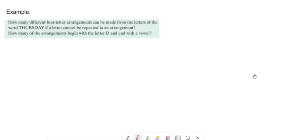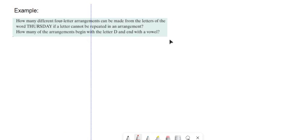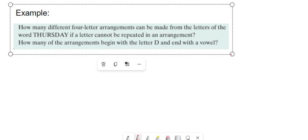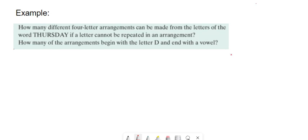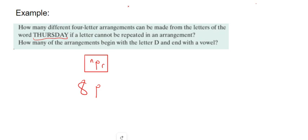Here's an example where we need to work out permutations. Taking the word THURSDAY: how many different four-letter arrangements can be made from its letters, if a letter cannot be repeated? THURSDAY itself would be one permutation, but mixing up the letters gives loads more. Because there are eight letters in THURSDAY, we use 8 nPr 4 — press 8, then the nPr button, then 4 — and the answer is 1,680.